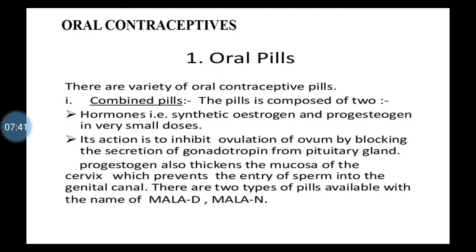One type is the combined pill, which contains synthetic estrogen and progesterone in very small doses. Its action is to inhibit ovulation of the ovum by blocking secretion of gonadotropin from the pituitary gland. The physiological effect interferes with the ovulation process in females. These oral pills are to be taken by females. Progesterone also thickens the mucosa of the cervix, which prevents entry of sperm into the genital canal.